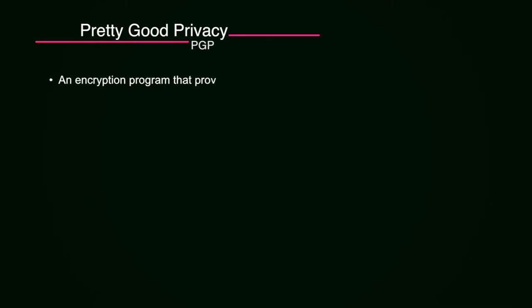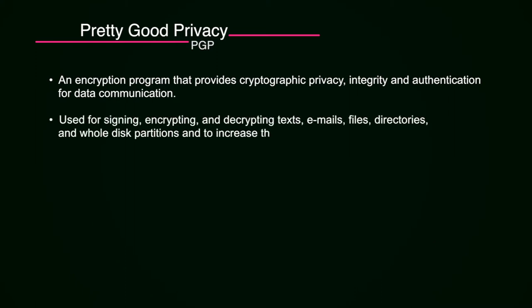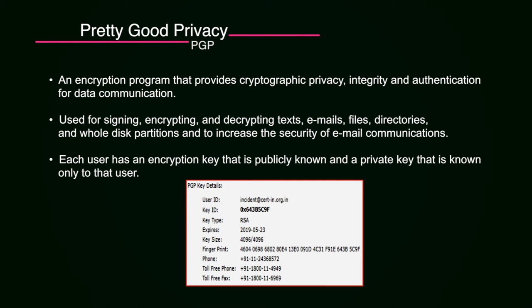Another tool used by CSIRT in incident handling is PGP — an encryption program that provides cryptographic privacy, integrity, and authentication for data communications. If you receive an email from a national CERT, PGP helps you verify whether the email is really from them — you can verify the email signed by the national CERT and verify the fingerprint key ID from the CERT's website. When sharing sensitive information related to security incidents or breaches, you should use PGP to encrypt the information, sign emails and files, so that trust can be verified.